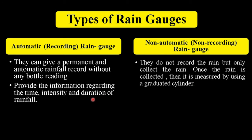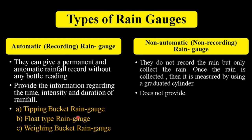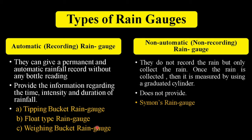The automatic rain gauge provides information regarding the time, intensity, and duration of rainfall, while no such information is provided by the non-automatic rain gauge. Tipping bucket rain gauge, float type rain gauge, and weighing bucket rain gauge are examples of automatic rain gauges, while the most commonly used non-automatic rain gauge is Simon's rain gauge.